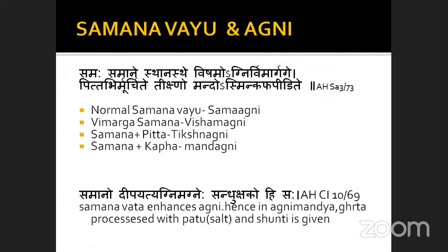Now let's see how the Doshas and Agni are related — Samana Vayu and Agni. Where is the location of Samana Vayu? Samana Vayu is located in the Koshta, Agni Sameepasthe. And where is the Sthana of Agni? In the Grahani Adhyaya, it is said Pakwamashaya Madhyaka. According to Arunadatta's commentary, Agni is located in the Grahani or Pakwamashaya Madhyaka. Both Samana Vayu and Agni share the same Sthana.